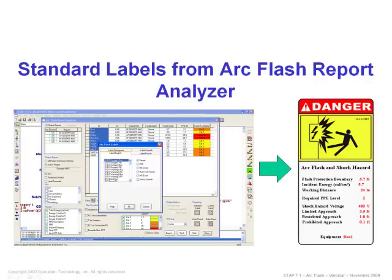Lastly, standard labels can be created using the ArcFlash Report Analyzer. The ArcFlash Report Analyzer is a new feature in ETAP 7.0. You can highlight the styles of your choice or the equipment of your choice and select standard label, which is the button located in the bottom right-hand corner. From there, you also have the selection of choosing your language of choice and the template and size.